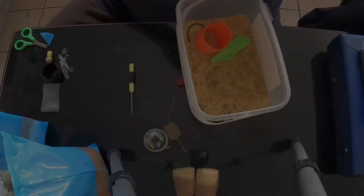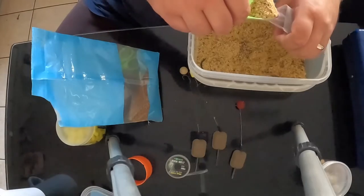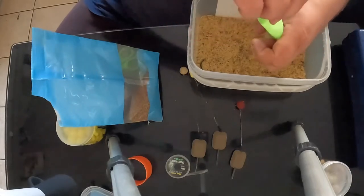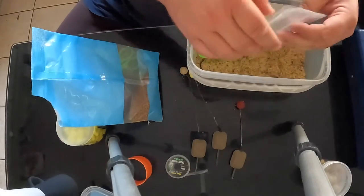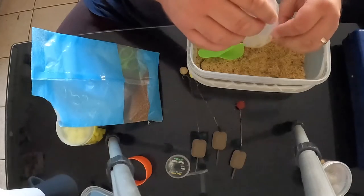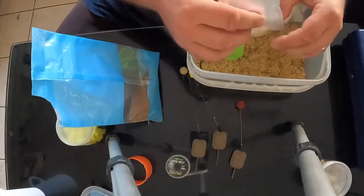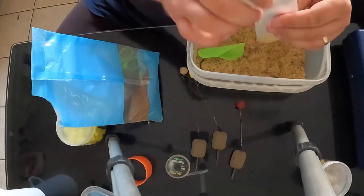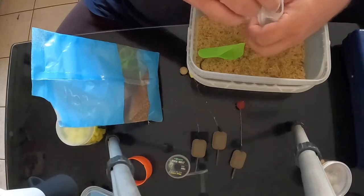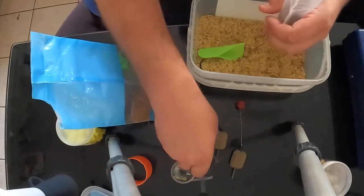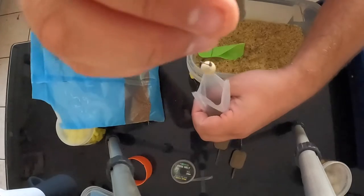We're just going to pop a small scoop of bag mix into the bottom. Before we put our hook bait in, I'll just clear a corner of the bag, and from that we're going to place the hook bait and the hook into the corner of the bag as best we can.